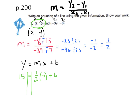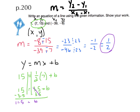1 half times 7 gives me 3.5. I'm going to subtract 3.5 from both sides so I can isolate b. That's going to give me b equals 11.5. Now that I know m and b, I'm going to substitute both of them into my slope-intercept formula. That will give me the equation y equals 1 half x plus 11.5.